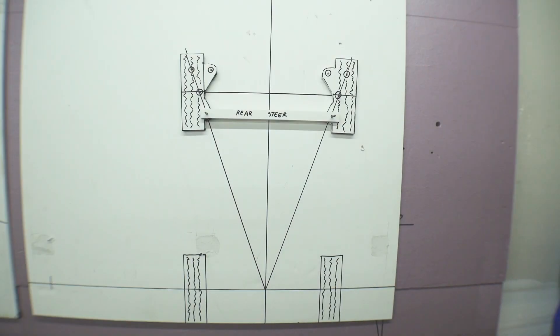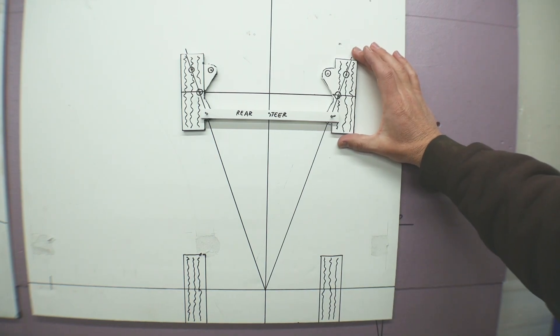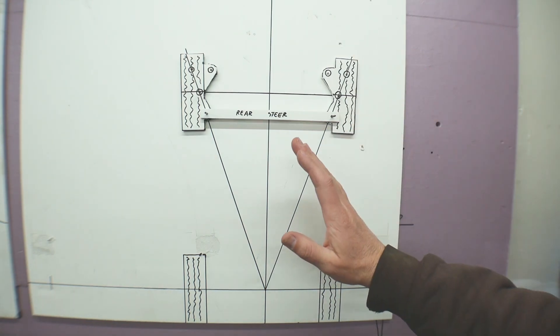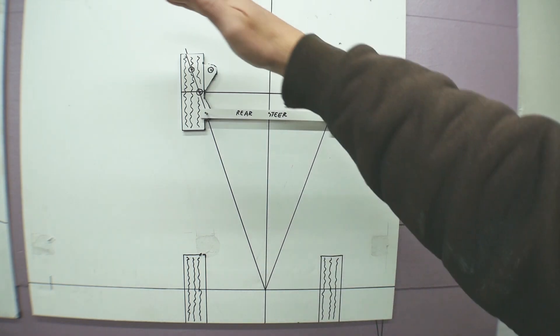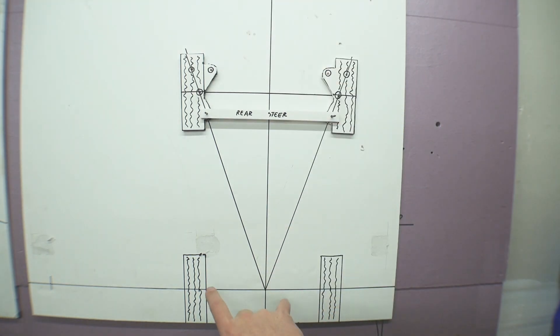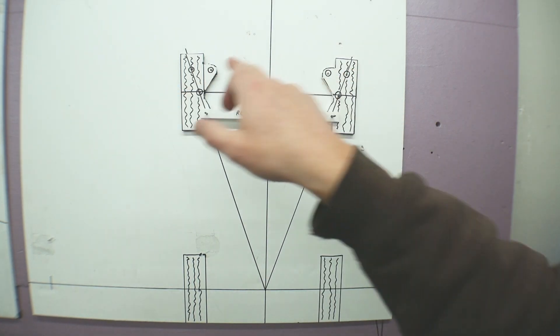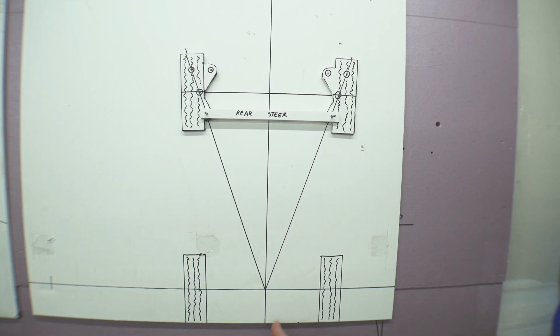I'm not going to try and explain exactly the definition of Ackerman, but what Ackerman is, is when a vehicle turns, makes a turn. This is the vehicle right here. These are the two rear tires, and these are the two front tires. This is the centerline of the chassis. This is the front axle. This is the rear axle.